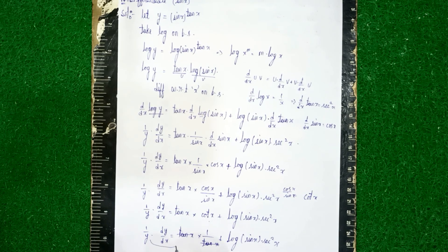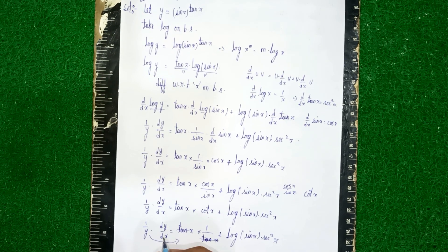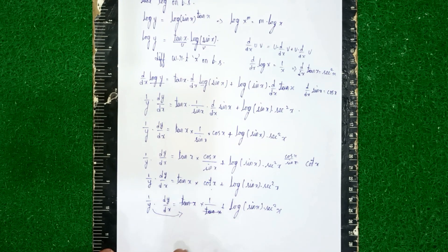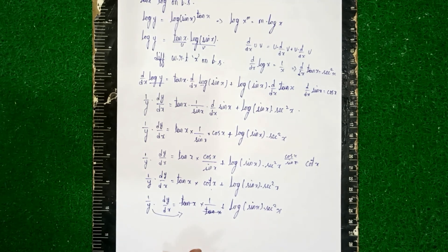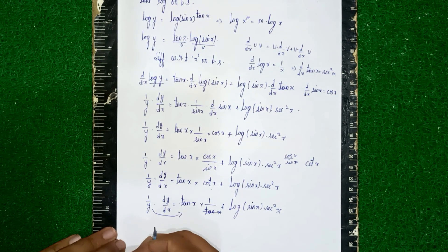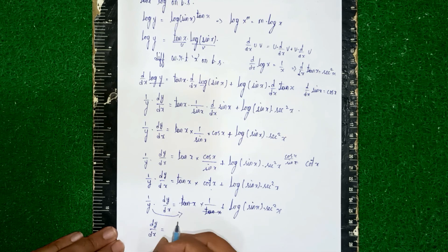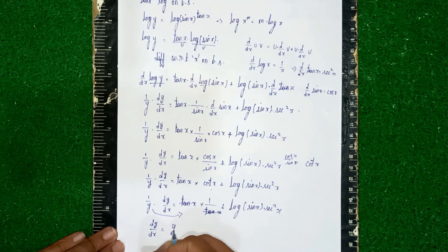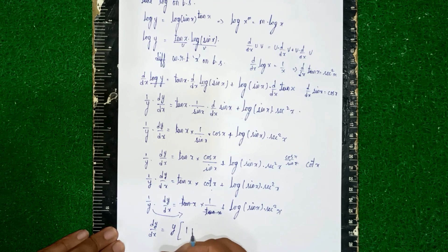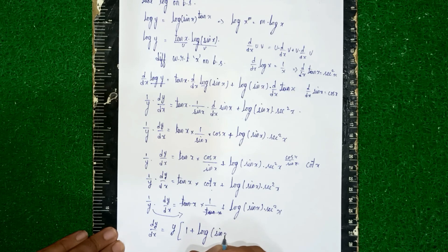Sending 1/y to the other side by multiplying, our final answer is: dy/dx = y·(1 + log(sin(x))·sec²(x)). This is our solution.